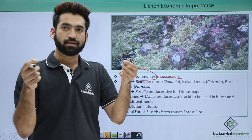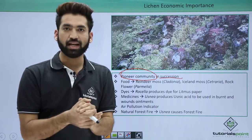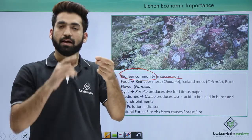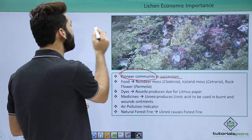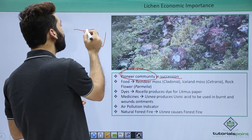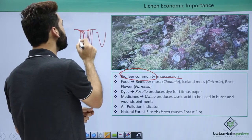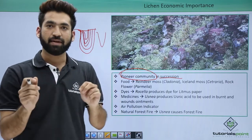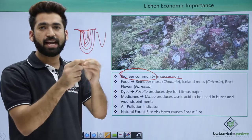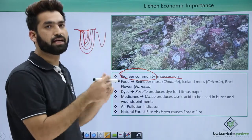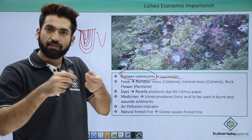In these barren rocky areas, lichen secretes certain chemicals because the fungus and algae partners together form the lichen. Lichen releases substances that degrade the rock, forming structures called crevices. These crevices deepen over time and get filled up with decaying particles from dead lichen.